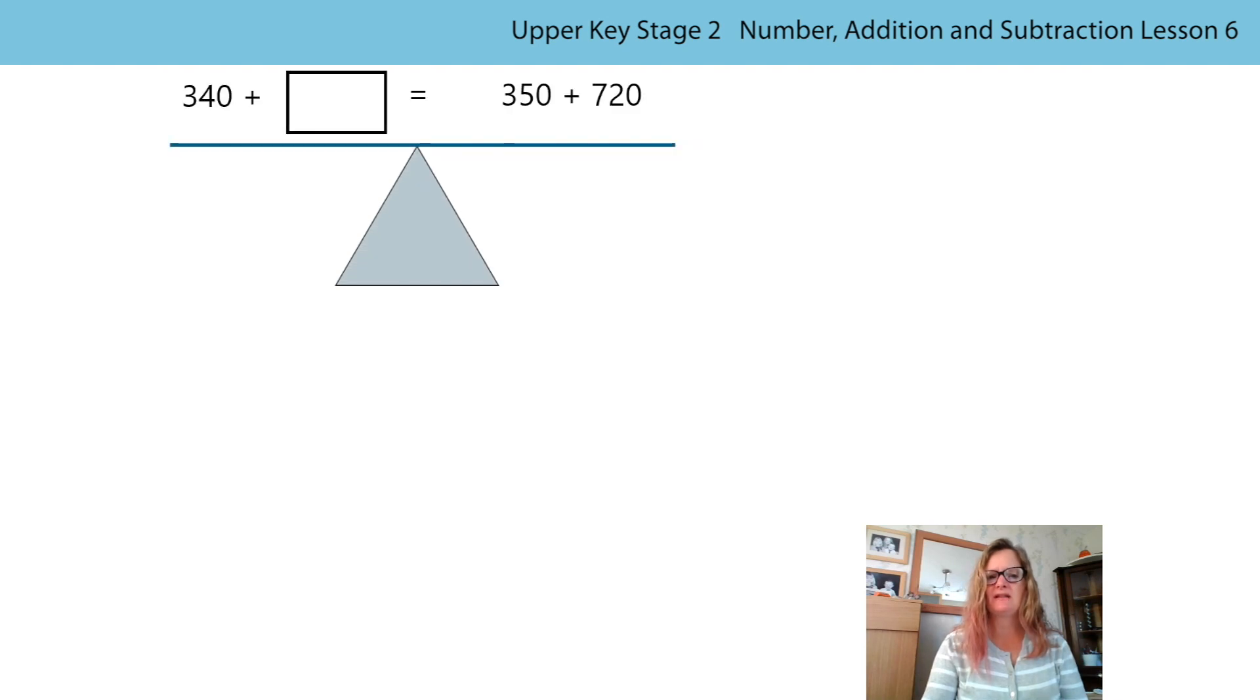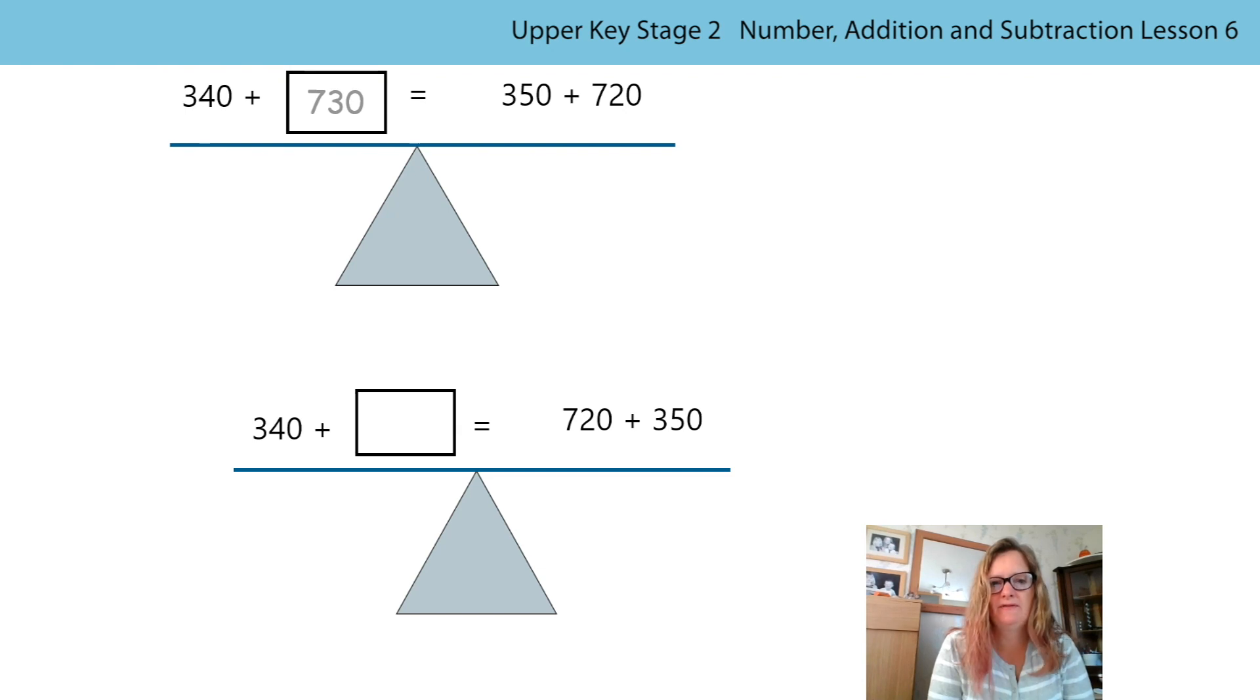Let's have a look and see if you spot something different about this. We had our 340, it was related to the 350, so the first addend here was related to the first addend here. Do you notice something different about this calculation? That's right, we've got 340 here but 720 here. The addend that I really want to work with is not in the same place. It's the first addend here but the second addend over here. Does that matter? It doesn't matter which addend I use as long as I get the redistribution correct.